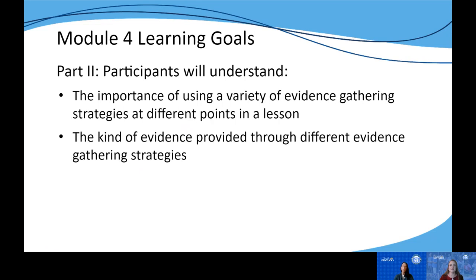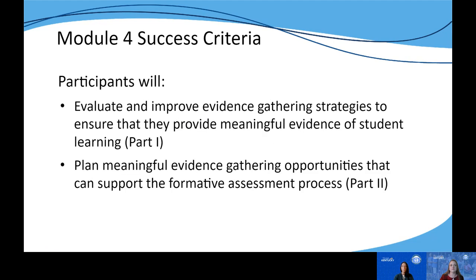In part two of this module, participants will understand the importance of using a variety of different evidence-gathering strategies and utilizing those at different points in a lesson, as well as understanding the kind of evidence provided through each of those strategies. The success criteria for this module: participants should be able to evaluate and improve the evidence-gathering strategies they utilize at the classroom level, and plan for meaningful evidence-gathering opportunities that will support the formative assessment process.